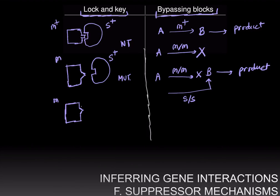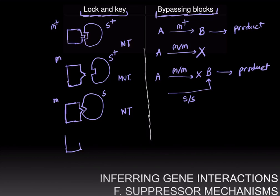If however there exists a mutant allele of S which compensates perfectly for the change in shape of M resulting from the mutation, then the two proteins will fit once again like lock and key, and the suppressor will suppress the mutant phenotype and revert us to the wild-type phenotype. And of course, if you have the wild-type protein of M and the mutant protein of S, you will again be a mutant.